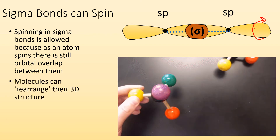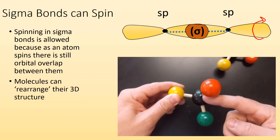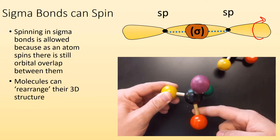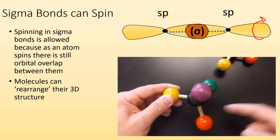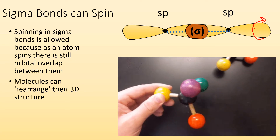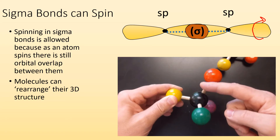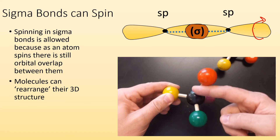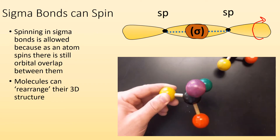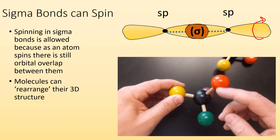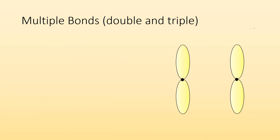So molecules can rearrange their 3D structure — you can see in the GIF that they're spinning. If those different colored atoms were longer parts of the molecule, they can change their orientation and 3D structure because those sigma bonds are able to spin. So when we look at multiple bonds, meaning double and triple bonds, they're going to involve a different kind of bond — not a sigma bond.